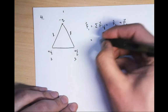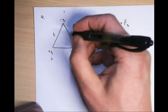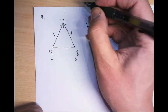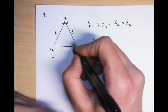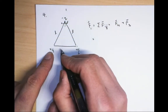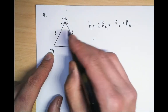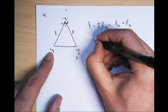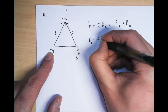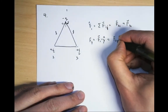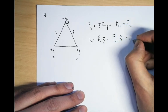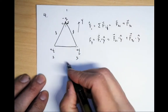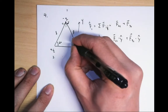By the same symmetry argument as before, there is no net force in the x direction — if you flip the configuration, the x-component would have to flip but the situation is the same, so it must be zero. We only care about the force in the y direction: Fy equals F₂₁ dot ŷ plus F₃₁ dot ŷ. The y-direction is chosen pointing down from vertex 1.